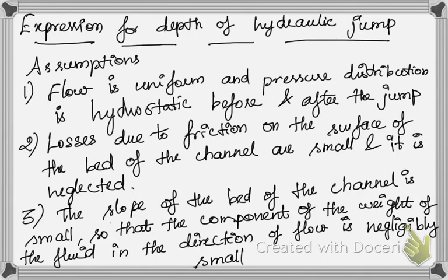Hello everyone, hope you are all safe at home. Today we are going to see about the expression for depth of hydraulic jump. I am Dr. Suriya. A hydraulic jump is a rise of water level that takes place due to transformation of supercritical flow to subcritical flow. When the flow transfers from supercritical to subcritical flow, the hydraulic jump occurs - generally when the flow is under a sluice gate, it will accelerate the hydraulic jump.